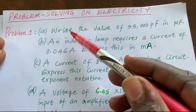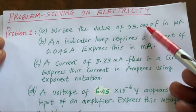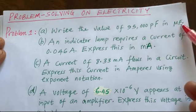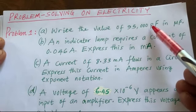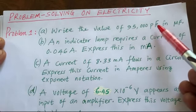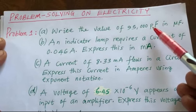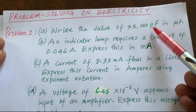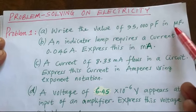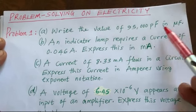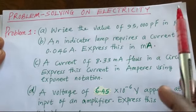Part A says: write the value of 95,000 picofarad in microfarad. This means you are given a capacitance value in picofarad, which is an extremely small unit, and you are asked to express this in a bigger unit — microfarad.